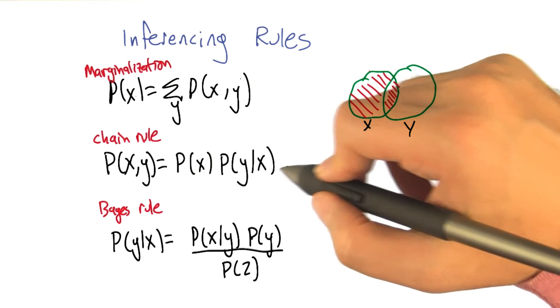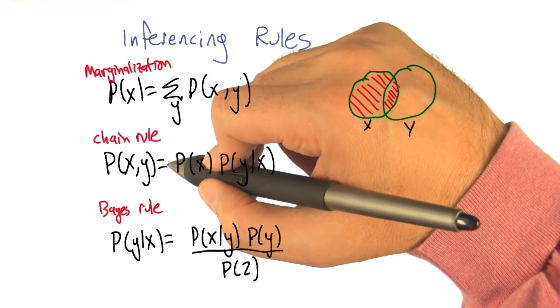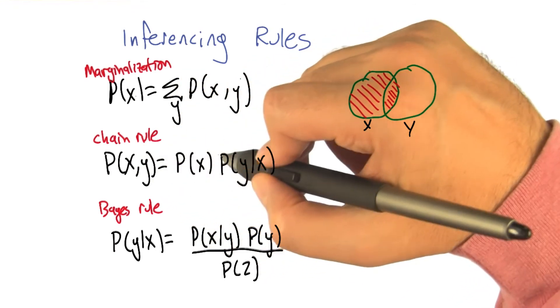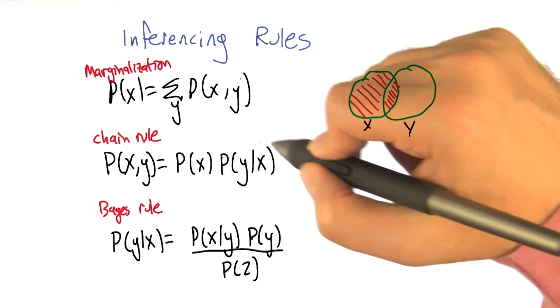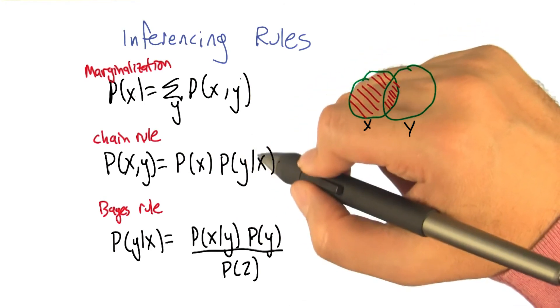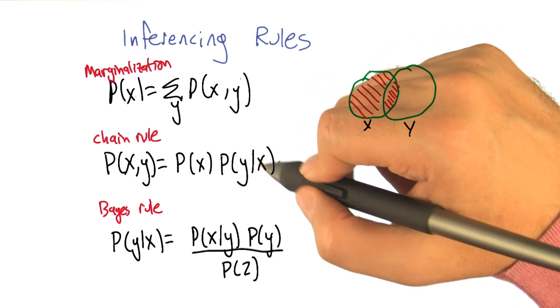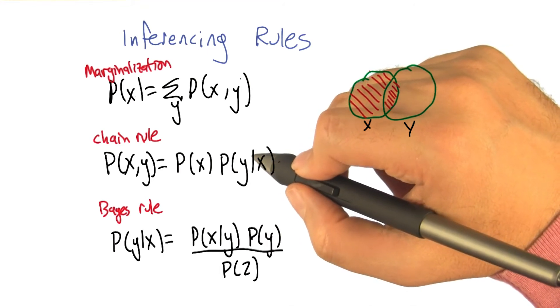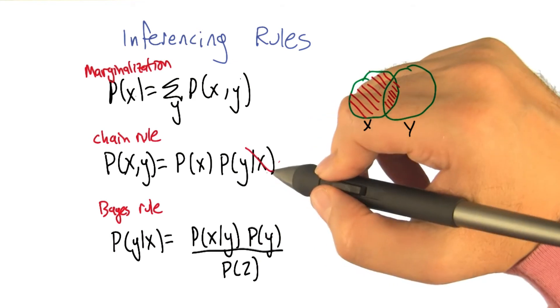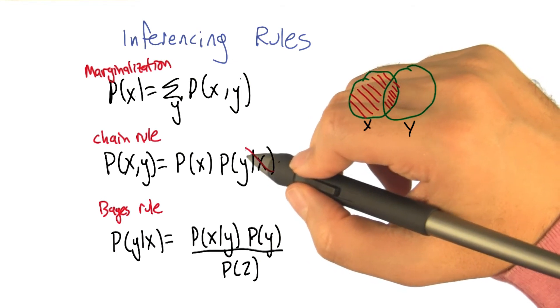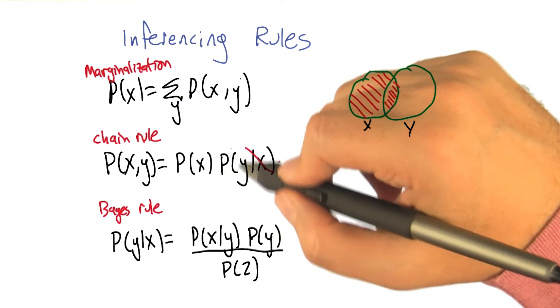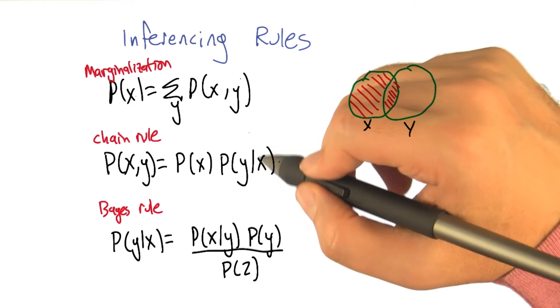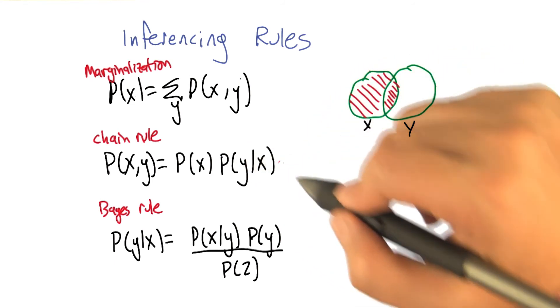The chain rule, we've used this a bunch of times. The probability of x and y can be written as the probability of x, times the probability of y given x. And it's important that we have the given x. If we drop that, what is that implying? Well, if you drop it, then that implies that they are completely independent of one another. Right. In the case where the variables are independent, you can just look at their product. In the general case, you actually have to look at the second one given the first one.